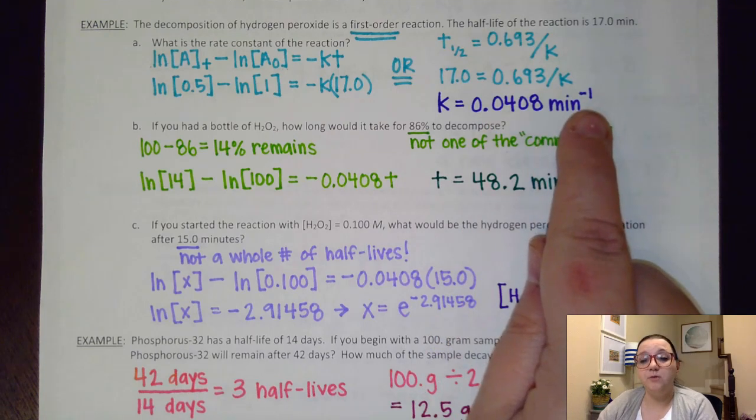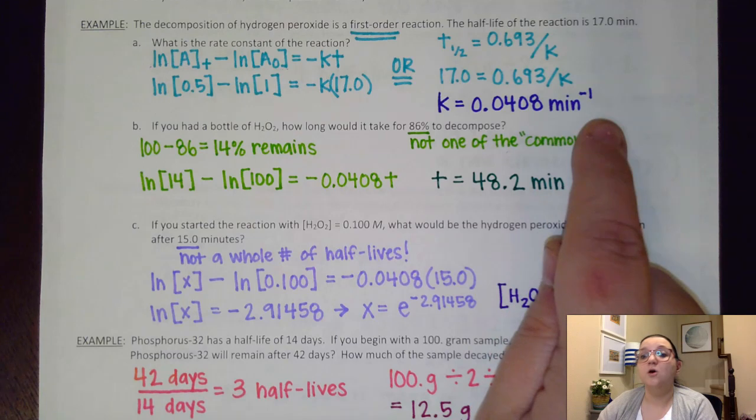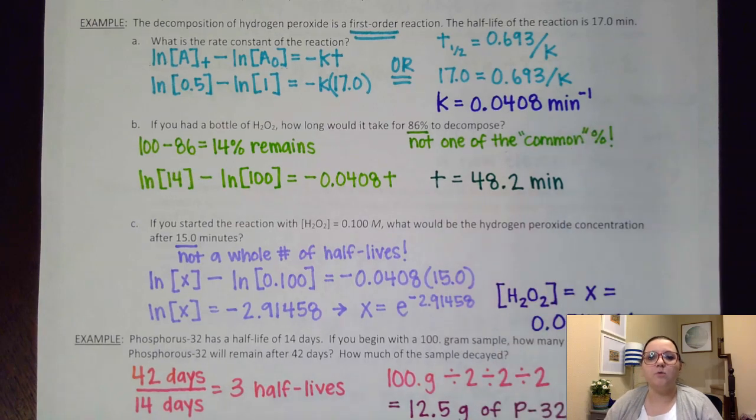Regardless of which way you solve it, you should get a value of 0.0408 min⁻¹. I would normally multiply this times molarity raised to the overall order minus 1. However, my overall order was simply just 1. So 1 minus 1 would end up being 0, and so that's why I didn't include the molarity as part of this unit.